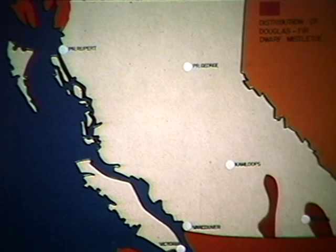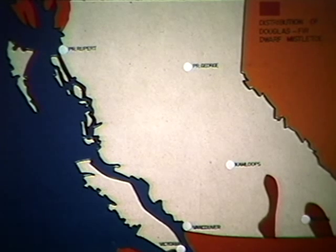In hemlock, it occurs in the coastal forest stands, while stands in the interior wet belt are free from infection. Larch mistletoe occurs only in southeastern British Columbia. In Douglas fir, the least affected of the principal hosts, the concentration is mainly in the Okanagan and Similkameen valleys. Douglas fir in the coastal forests remain free of the disease.